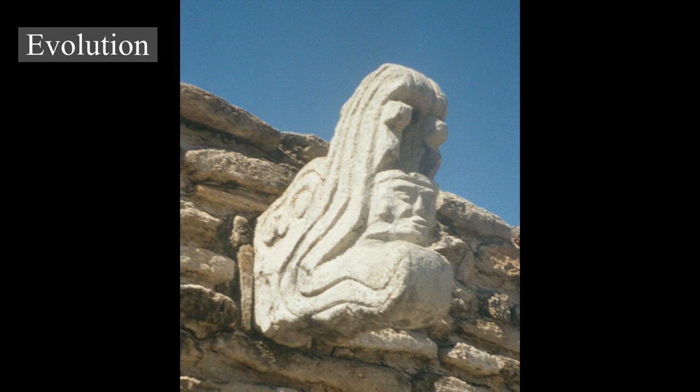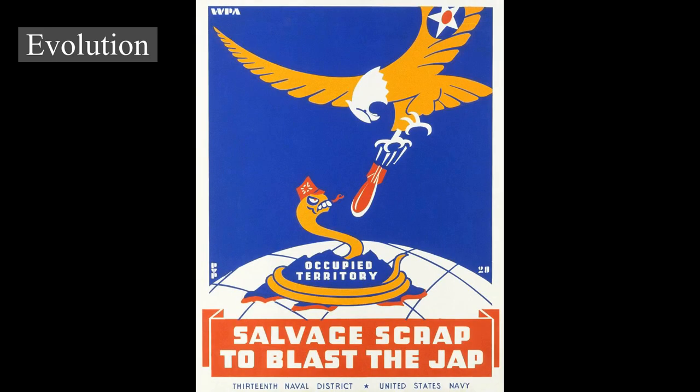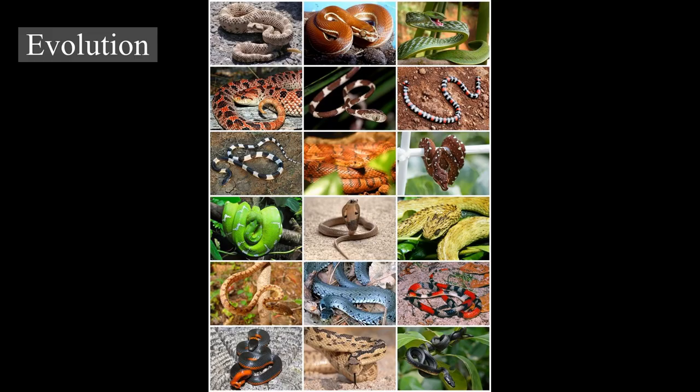The expansion of grasslands in North America also led to an explosive radiation among snakes. Previously, snakes were a minor component of the North American fauna, but during the Miocene, the number of species and their prevalence increased dramatically with the first appearances of vipers and elapids in North America and the significant diversification of colubrids, including the origin of many modern genera such as Lampropeltis, Pituophis, and Pantherophis.